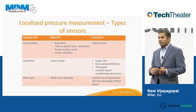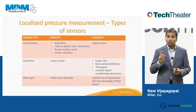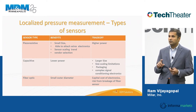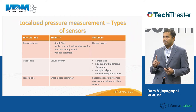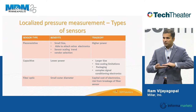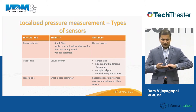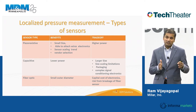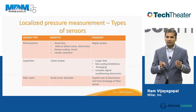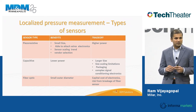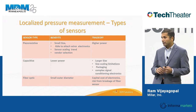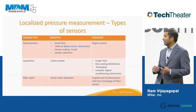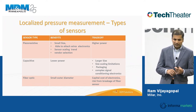Capacitive sensors are the second option. They're lower power and well-suited for implantable applications, but come with trade-offs: they must be packaged very closely to the signal-processing IC due to parasitics, they don't scale well and are typically much larger than piezo-resistive sensors, and they have complex signal conditioning electronics.